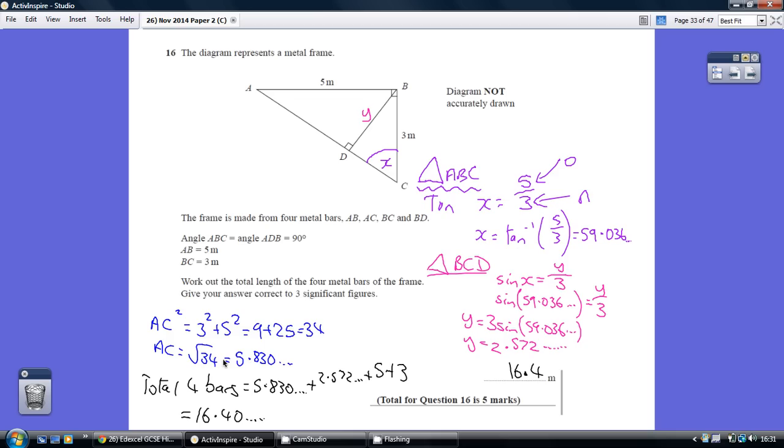So AC is the square root of 34, which is 5.83 and so on. That just leaves us to find the length of the bar BD. Now I think we need to do two things. First of all,